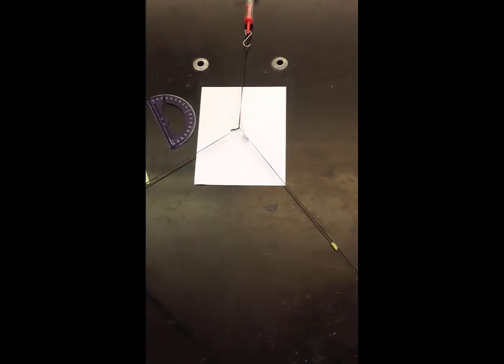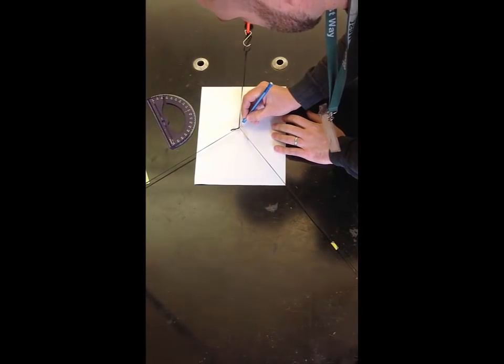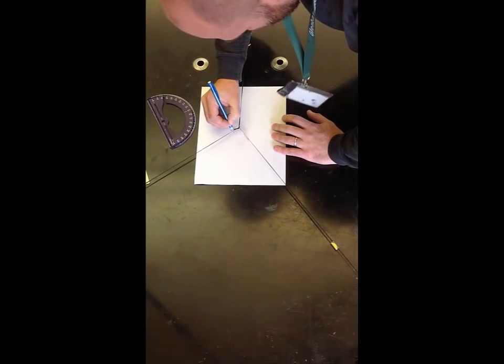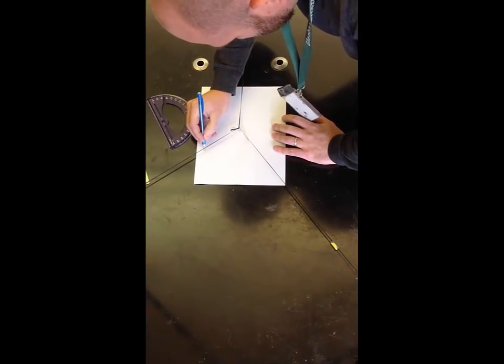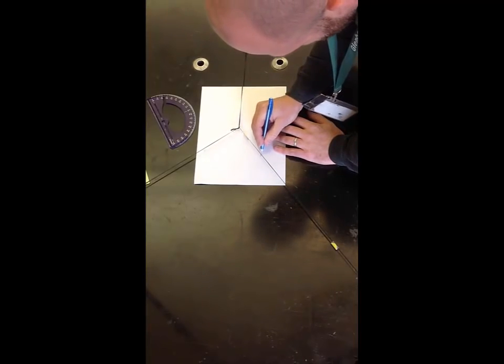So once you have your paper laid out underneath your strings, you're going to take a look at your strings and gently line up two points underneath each string. Those two points, once connected, will give you your vectors representing the force in those springs.